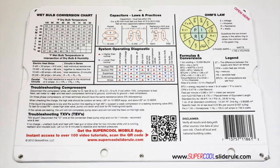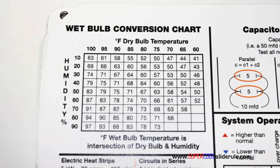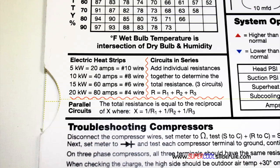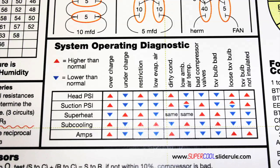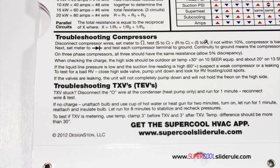The back cover contains required formulas, capacitor rules and practices, a wet bulb conversion chart, how to perform computations on series or parallel circuits, an electric heat strip guide, a complete system troubleshooting diagnostic chart, and how to troubleshoot compressors and TXV.